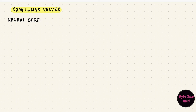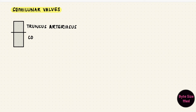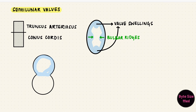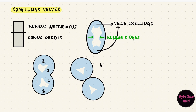Lastly, we have the semilunar valves. Neural crest cells form valvular swellings at the region where the semilunar valves will be located — at the junction between the truncus arteriosus and the conus cordis. The bulbar ridges fuse when the aorticopulmonary septum forms, and the two channels separate, each receiving three swellings which get modified to form cusps. In the end, there are three cusps for the aortic valve — right, left, and posterior — and three cusps for the pulmonary valve — right, left, and anterior.